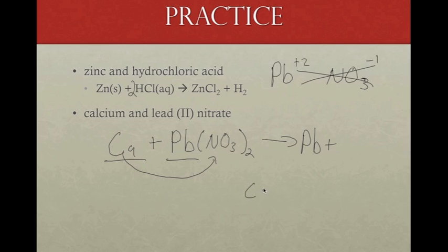So lead is just written by itself. It's not a diatomic, so we leave it as that. And then we'll have calcium, which is just Ca, plus two oxidation number because it's in group two, and then NO3 for nitrate. Crisscross these guys, and we get Ca(NO3)2. And that's already balanced for us. It's very nice and neat.